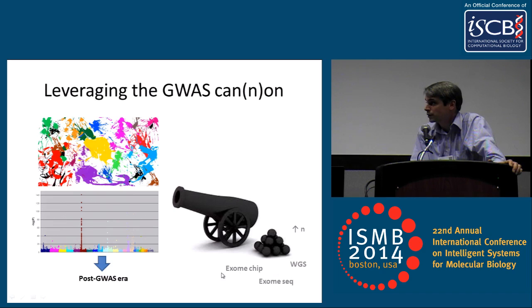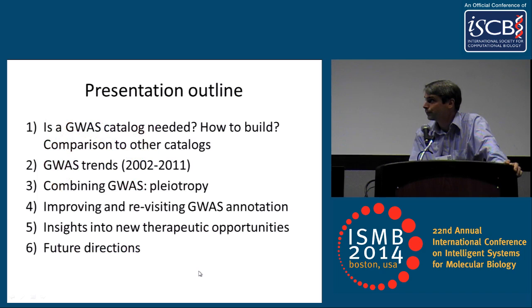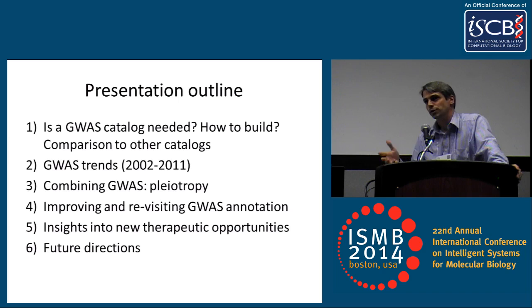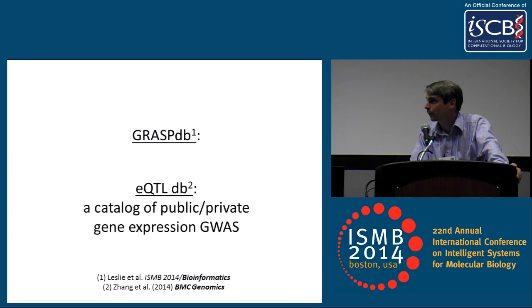I think we need to think about how we can pivot to using the large data sets we've already generated. Is a GWAS catalog needed? I think that's a somewhat redundant question — I'll just point to impact factor. Our 2009 paper has been cited 200 times or so, while the NHGRI catalog paper that came out at a similar time has been cited 1,800 times in the last five years. So clearly people are using these pooled data to make inferences. But how should we build it compared to other catalogs, and what are some of the trends and the ways we've been using the data?